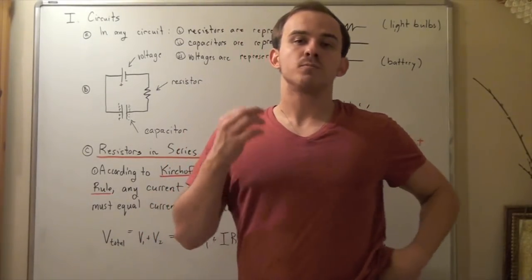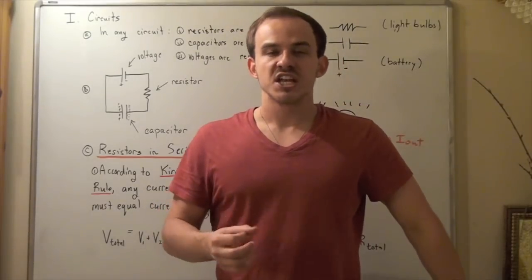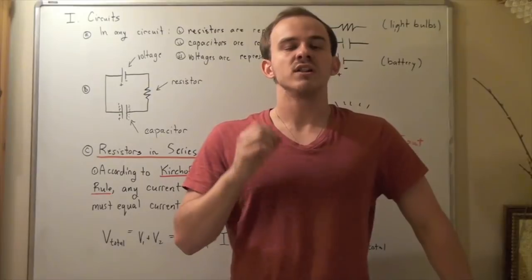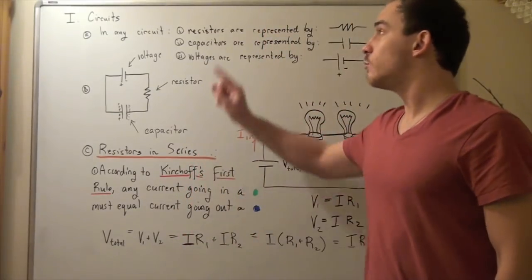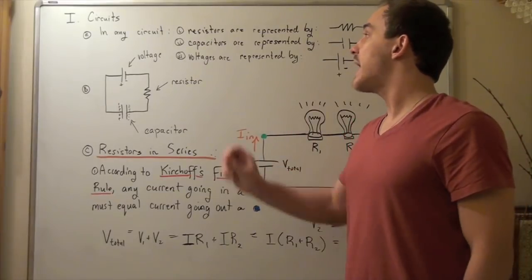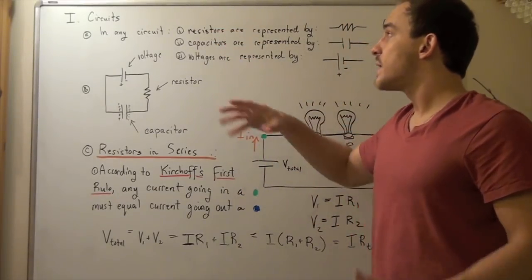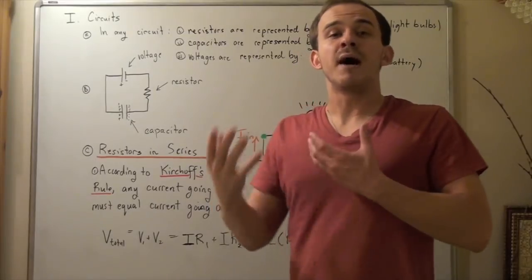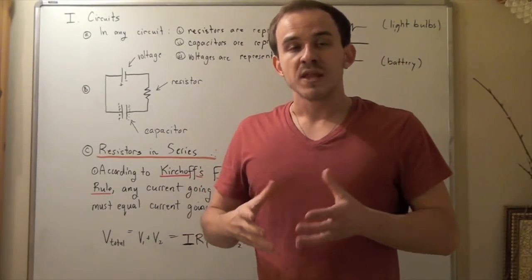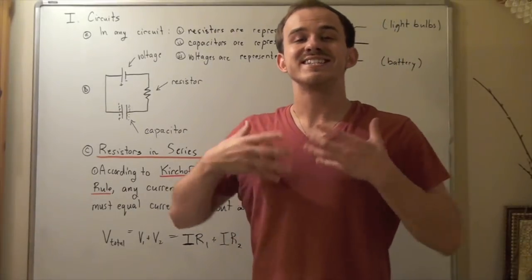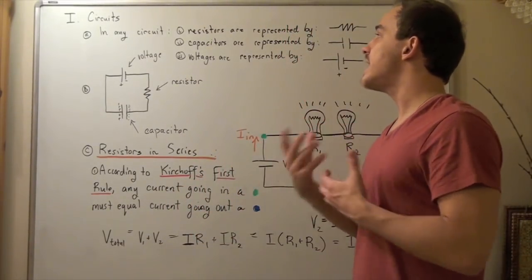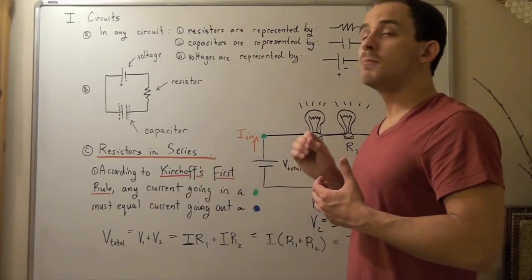We already spoke briefly about electric circuits, and we spoke about three important components: resistors, capacitors, and voltages. These three components can be mixed and matched and combined in many different ways on our electric circuit. In this lecture, we're going to examine the results produced when you make certain combinations of these three components.